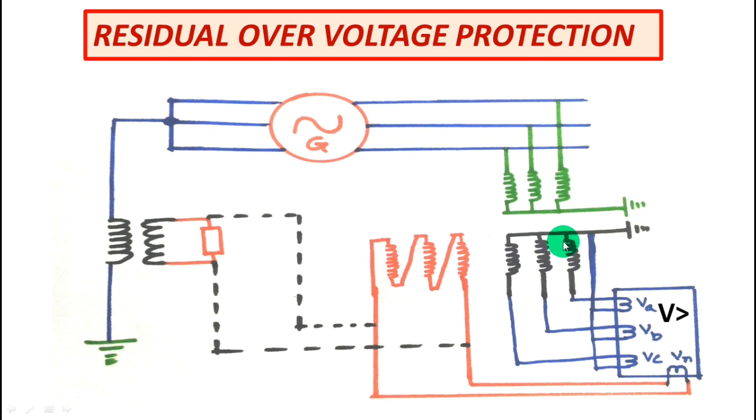So for implementing this scheme, this first scheme where the voltage neutral voltage will be or residual voltage will be calculated by the relay, you have to either select 3 single phase PT or a 5 limb 3 phase PT.